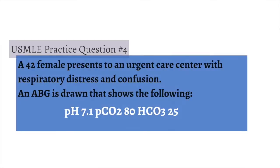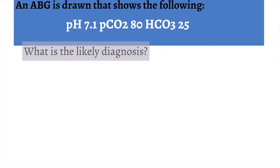Let's get to the question. A 42-year-old female presents to an urgent care center with respiratory distress and confusion. An ABG is drawn and shows a pH of 7.1, PCO2 of 80, and a bicarb of 25. What is the most likely diagnosis?